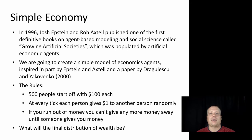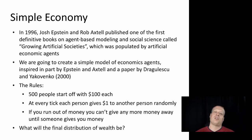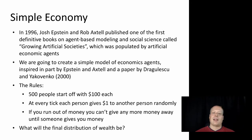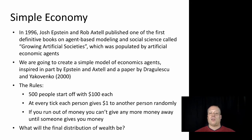That work really inspired a lot of research into using agent-based modeling to explore how economies and societies work. We're going to create a simple model of economic agents inspired in part by Epstein and Axtell's work and the paper by Dragulescu and Yakovenko in 2000. The basic idea is: we create 500 agents that start off with $100 each, and every tick each person gives $1 to another person randomly. This models an exchange economy. If you run out of money, you can't give any more money away — you can't buy anything if you have no money.